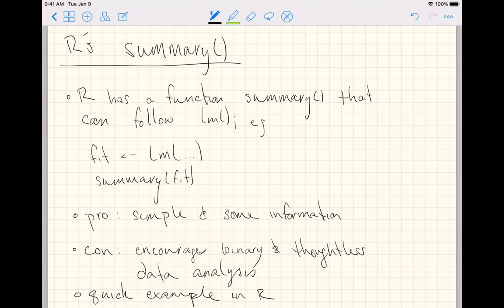Now it turns out R has a function summary for a number of different objects, but I'm specifically referring to the summary method that will be called on lm returned objects, in this case fit.